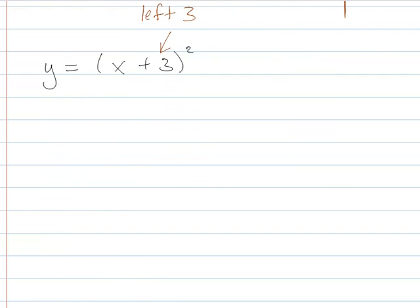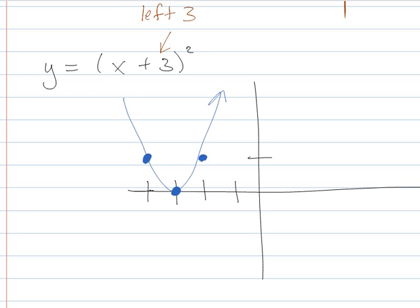So now even without having to draw a graph, I can go in here and I can say, I'm going to use my base, but it's going to move to the left 3. And then from there, it's just over 1, up 1, over 1, up 1, and go to town like that.